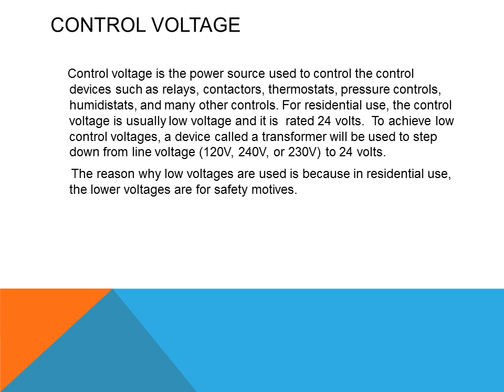Control voltage is the power source used to control devices such as relays, contactors, thermostats, pressure controls, humidistats, and many other controls. For residential use, the control voltage is usually low voltage rated at 24 volts. To achieve low voltage controls, a transformer is used to step down from line voltage — usually around 120, sometimes 240 or 230 volts — down to 24 volts.